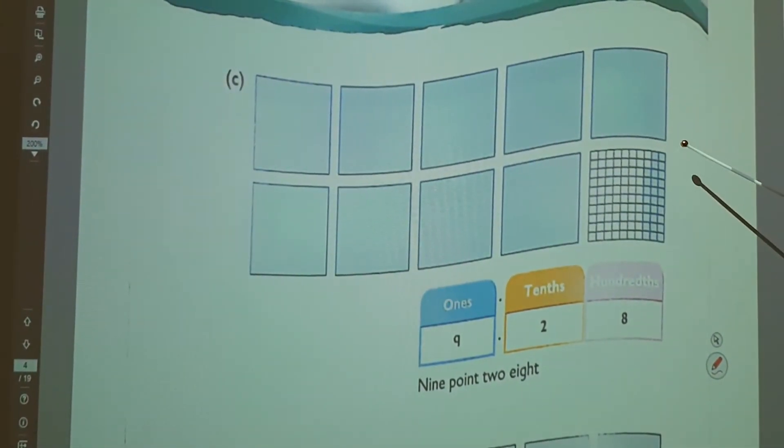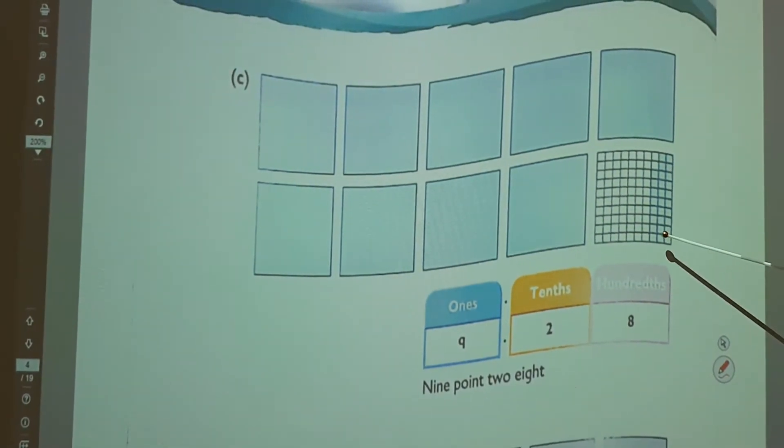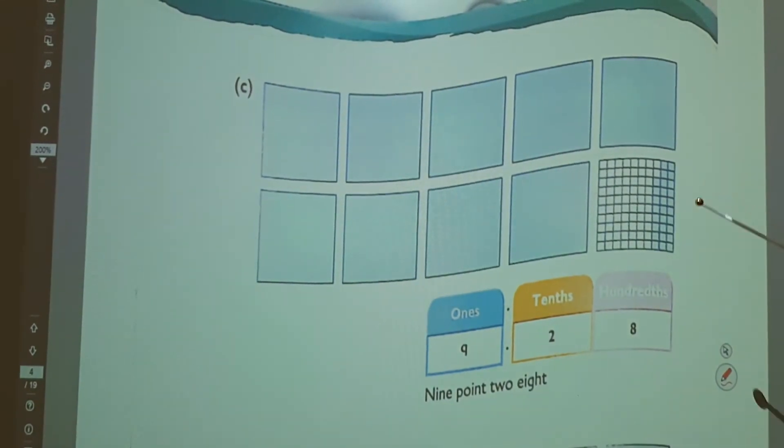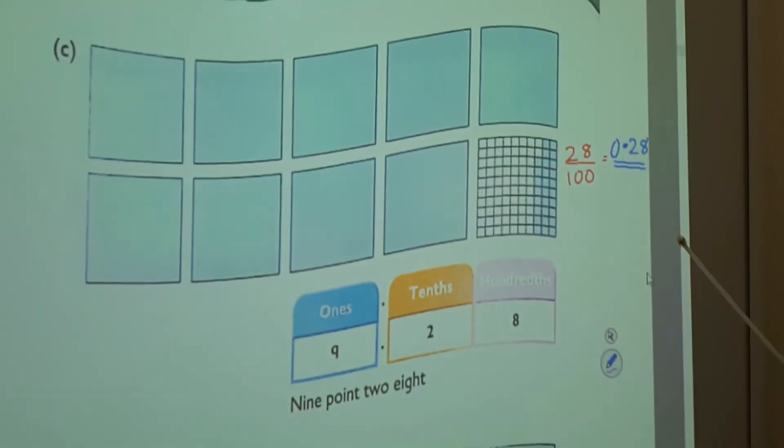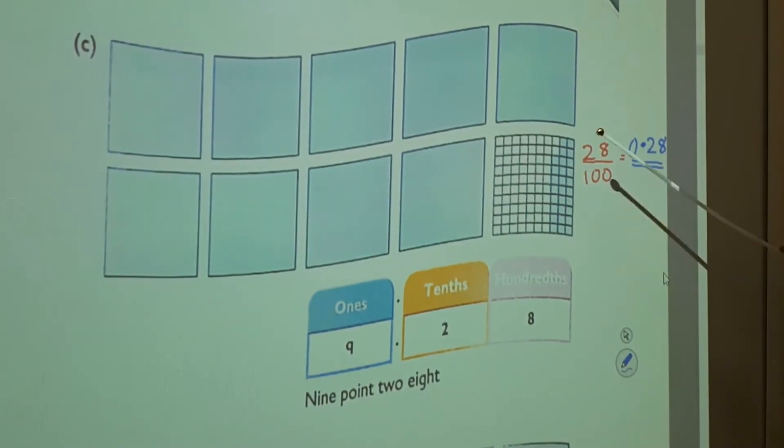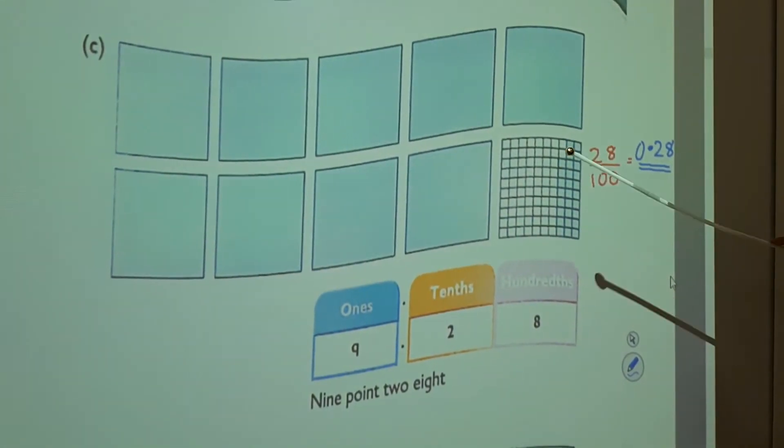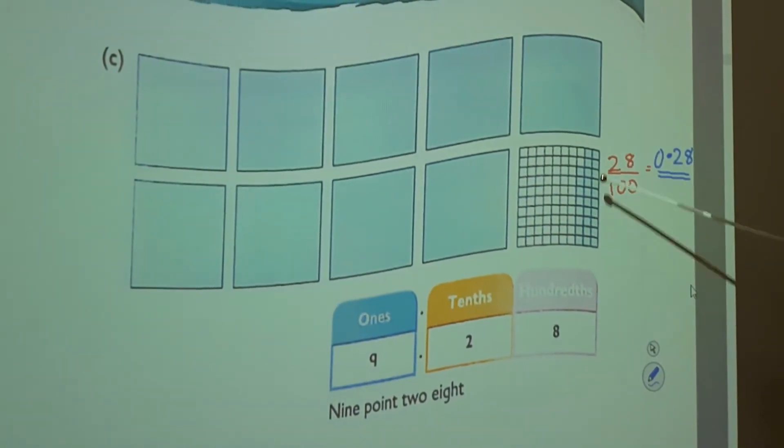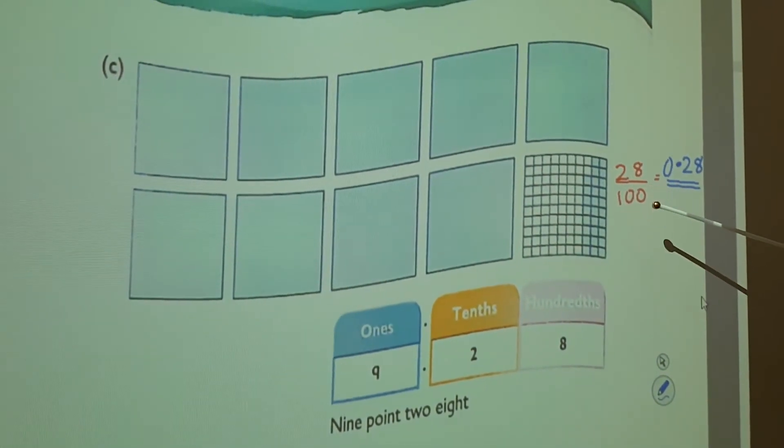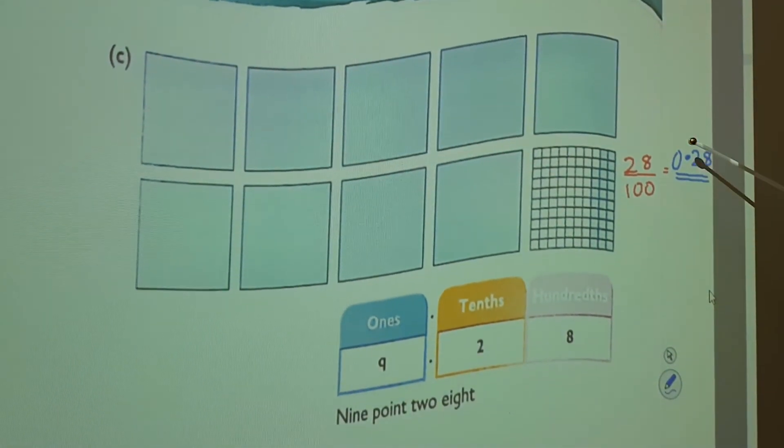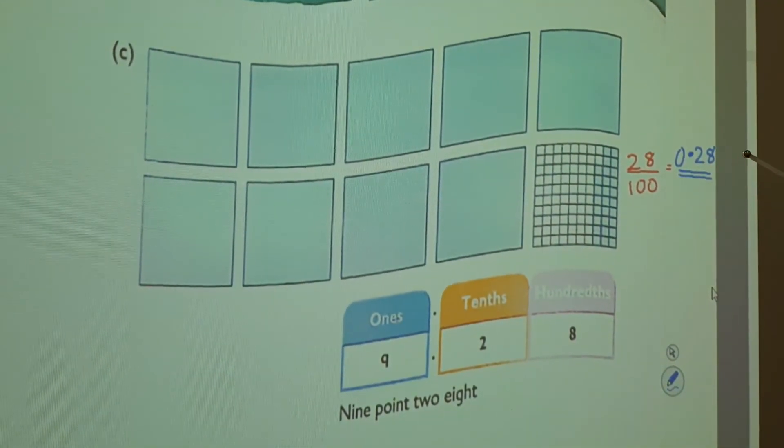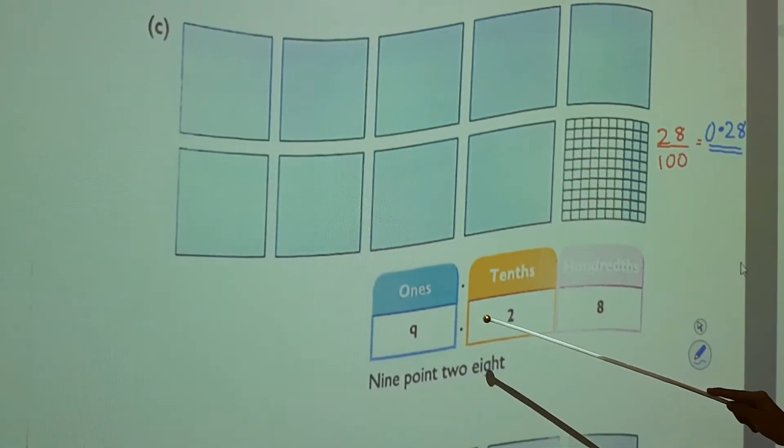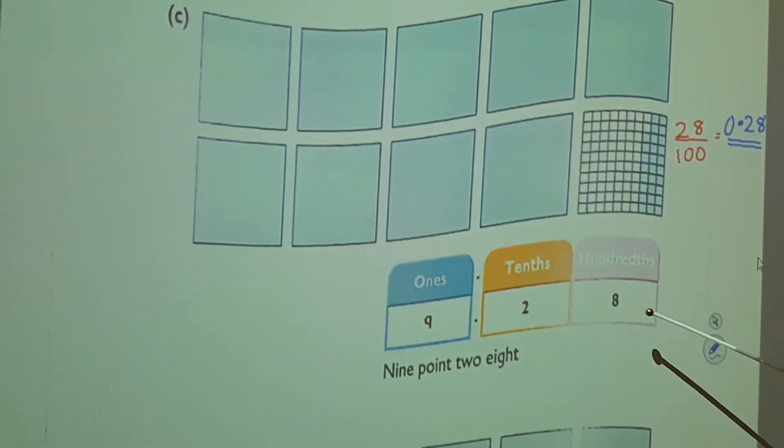So how much is colored here? 10, 20, 21, 22, 23, 24, 25, 26, 27, 28 is colored here. So we divided this whole box into 100 equal portions. How much is colored? 28. So 10, 20 and 8. So 28 by 100. That means how many zeros? 2 zeros. So it is 0.28. After this, it will place 2 digits. So 0.28. See, the number 9.28.